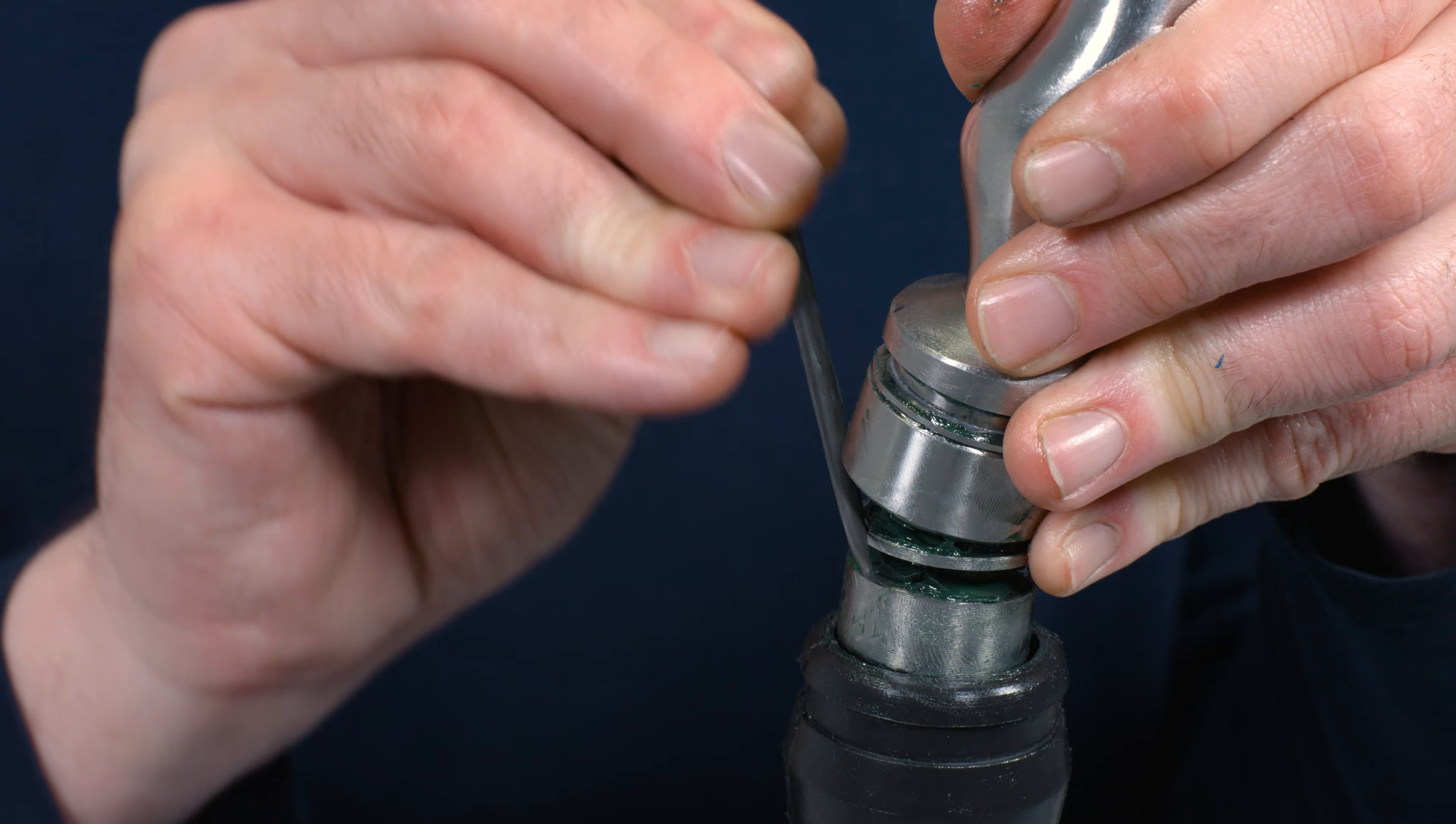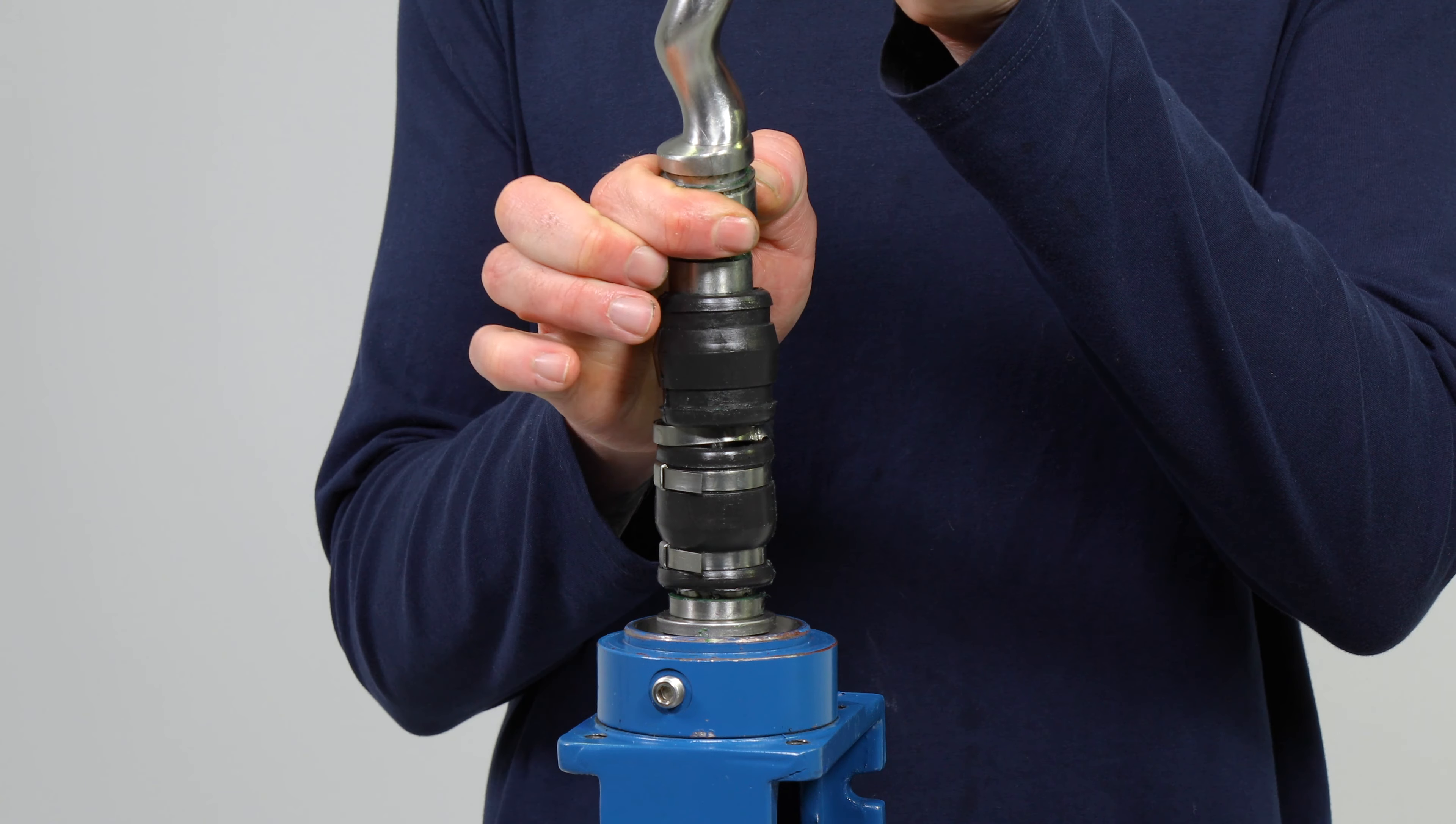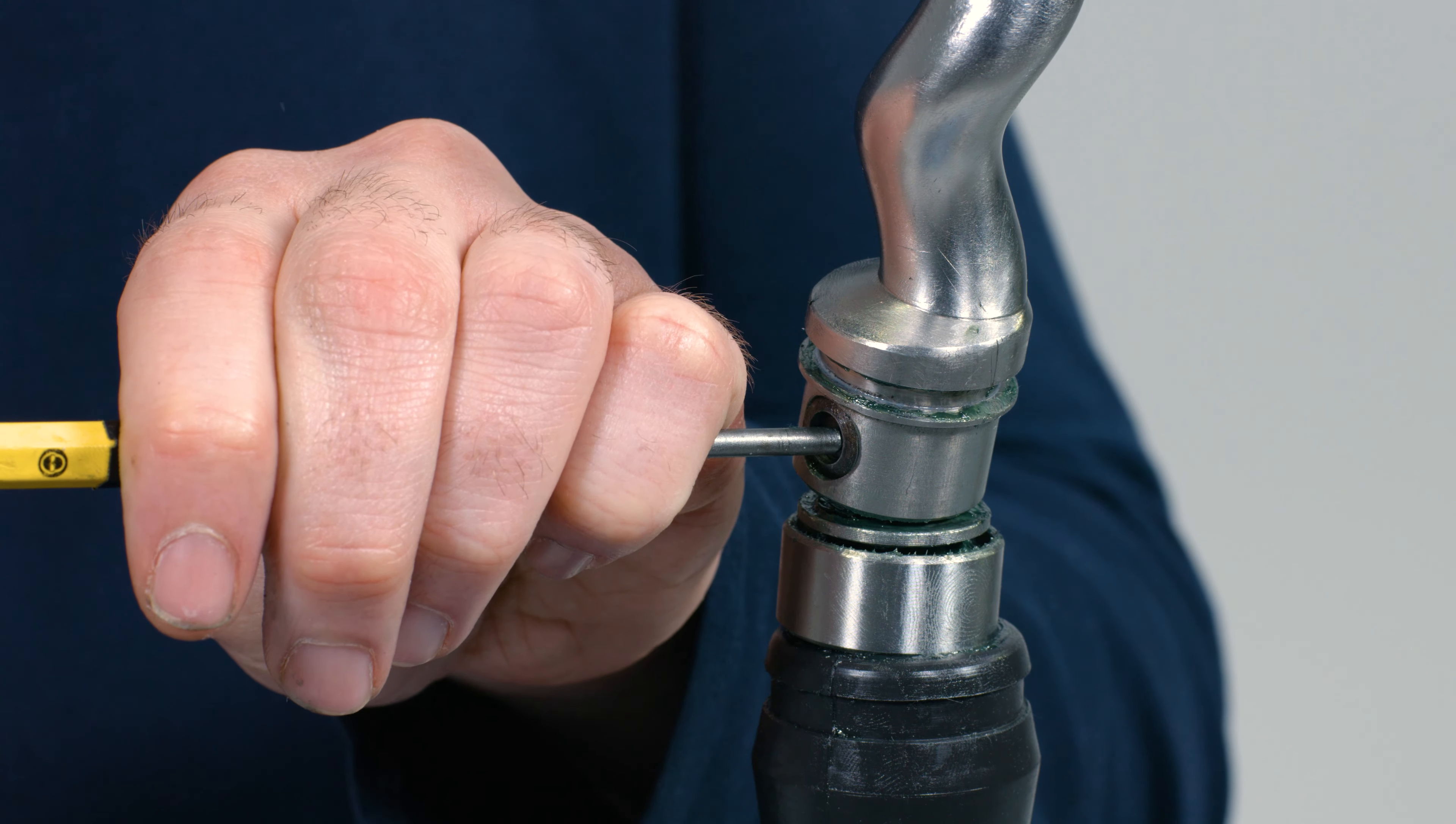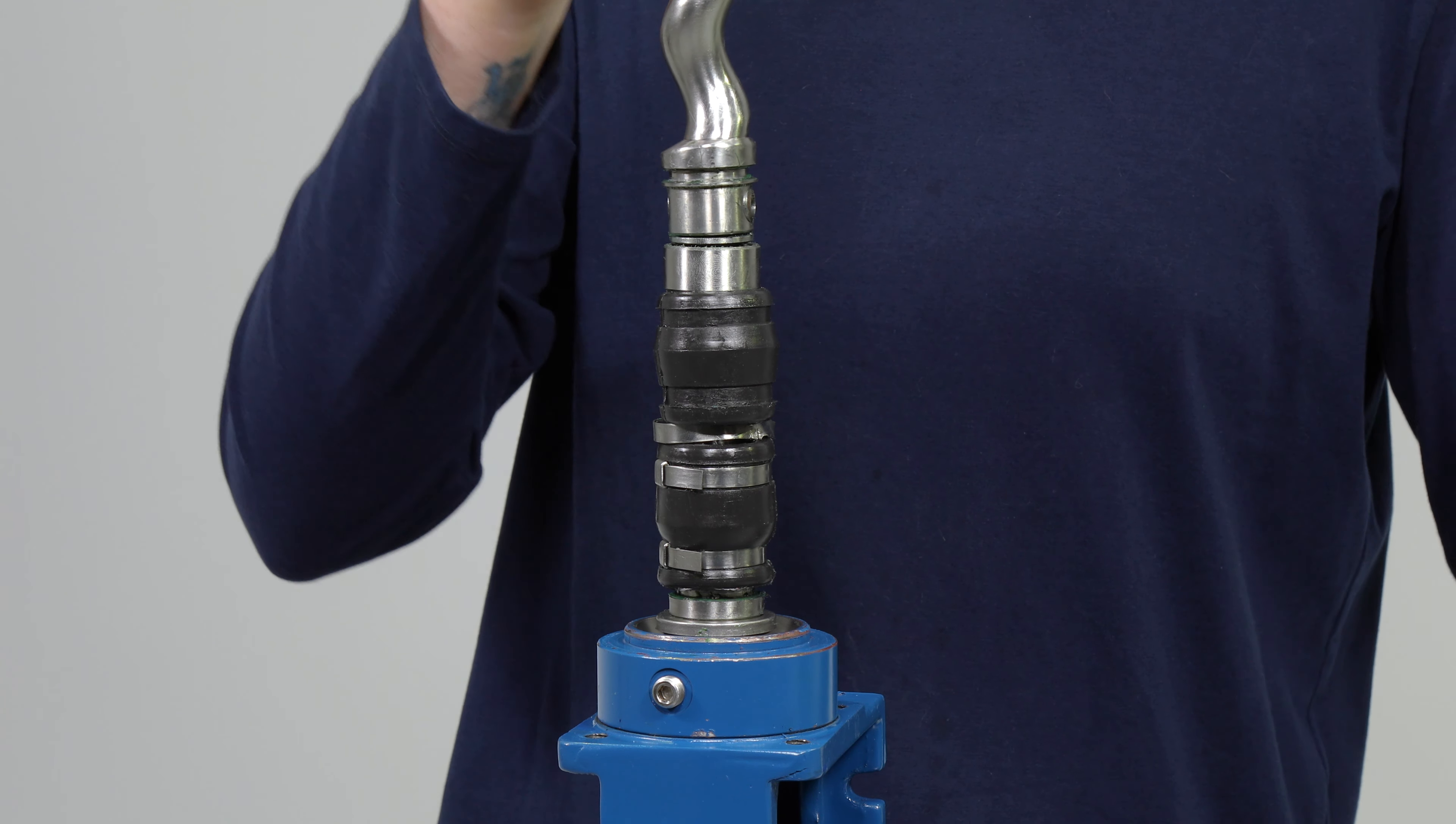Use a small file to remove the peen mark used to keep the pin cover sleeve on the rotor head. Slide the pin cover sleeve down and off the rotor head. Remove the pin by using a punch and hammer. Once the pin is removed, you can lift the rotor off the connecting rod.